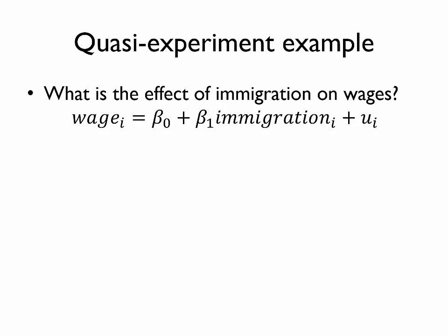If we wanted to test empirically whether this is the case, you might imagine estimating a regression like the one shown here. Suppose we collect data on different regions or cities denoted by i, and we collect data on the average wage in city i, and we regress that wage on some measure of the immigration for that locality, for example, the percent of the population in that area are immigrants.